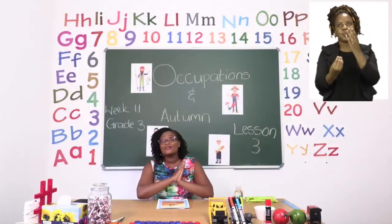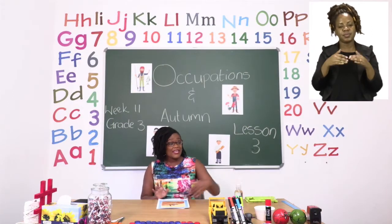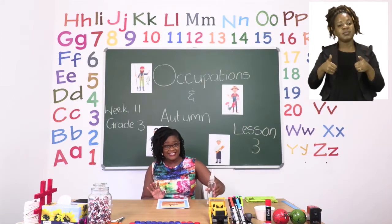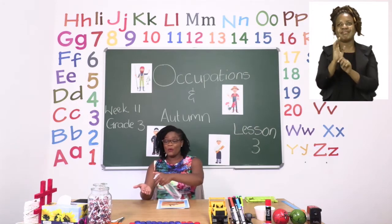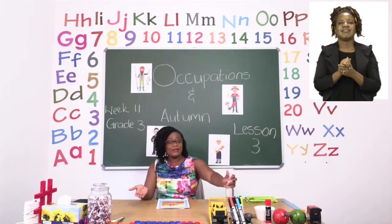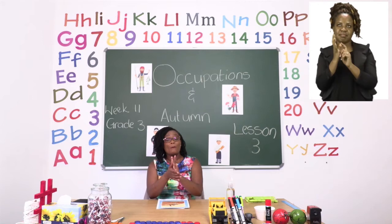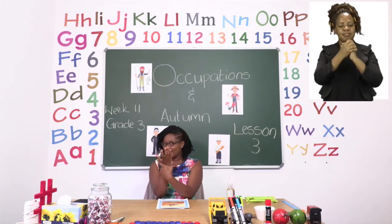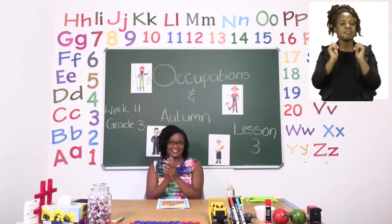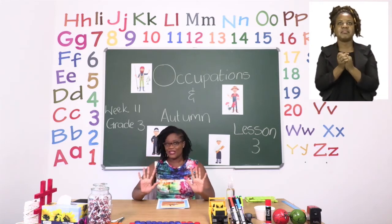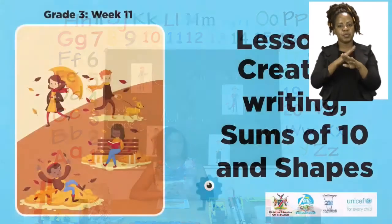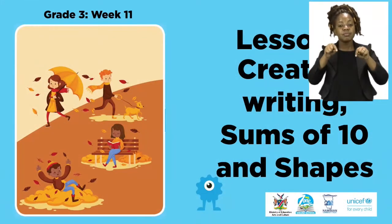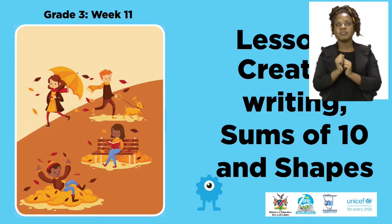Before we get into any lessons, boys and girls, we need to sanitize. When you sanitize, please make sure that you are rubbing both of your hands, making sure they both get the same amount of attention and sanitizer. Then make sure that your hands are dry before you touch anything else. For today's lesson, we will be talking about creative writing, sums of 10, as well as shapes.